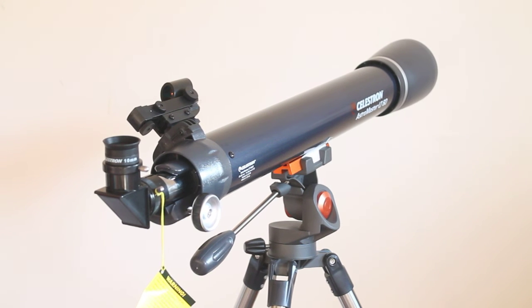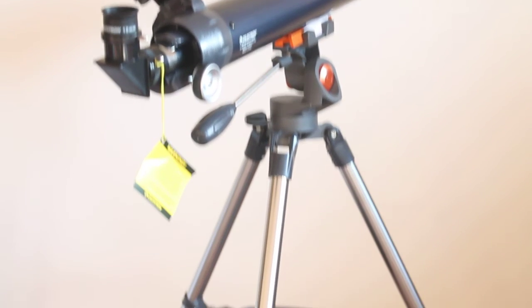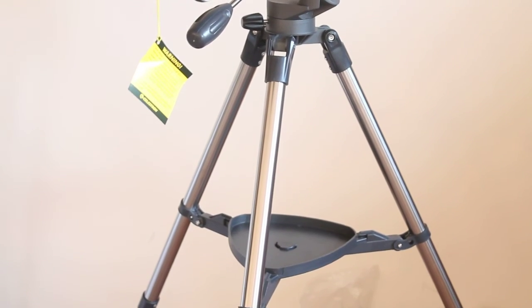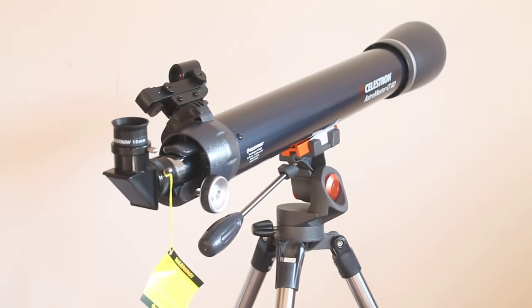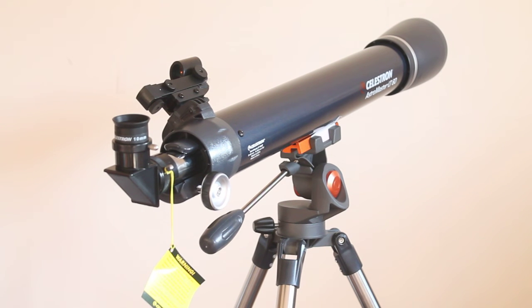It comes with a red dot finder scope, the AZ mount you get with this, and as you can see an accessory tray. It's not quite as sturdy as some of the Astromaster mounts that you get with the 130 Newtonian and the larger refractors.